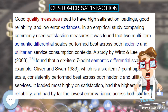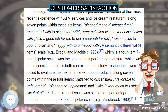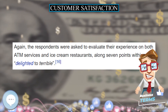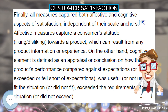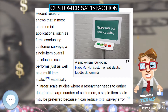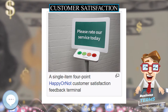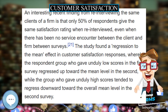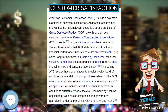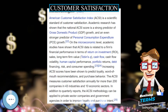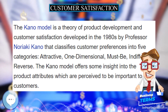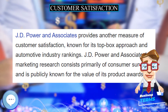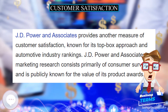A study by Wurtz and Lee, 2003, found that a six-item, seven-point semantic differential scale, for example Oliver and Swan, 1983, which is a six-item, seven-point bipolar scale, consistently performed best across both hedonic and utilitarian services. It loaded most highly on satisfaction, had the highest item reliability, and had by far the lowest error variances across both studies. In the study, the six items asked respondents' evaluation of their most recent experience with ATM services and an ice cream restaurant, along seven points within these six items: pleased me to displeased me, contented with to disgusted with, very satisfied with to very dissatisfied with, did a good job for me to did a poor job for me, wise choice to poor choice, and happy with to unhappy with.